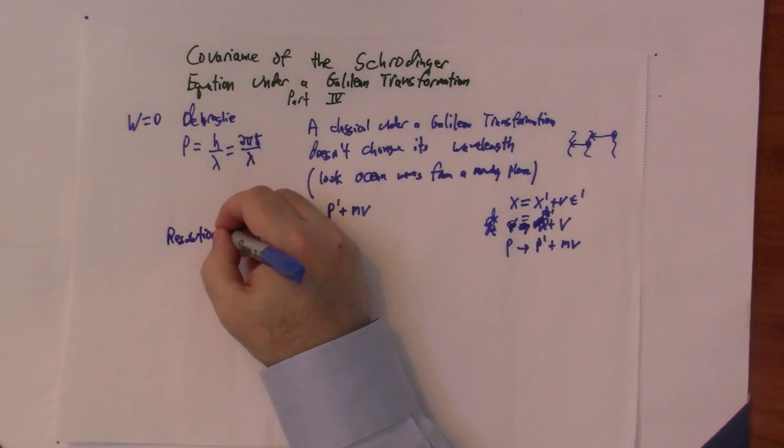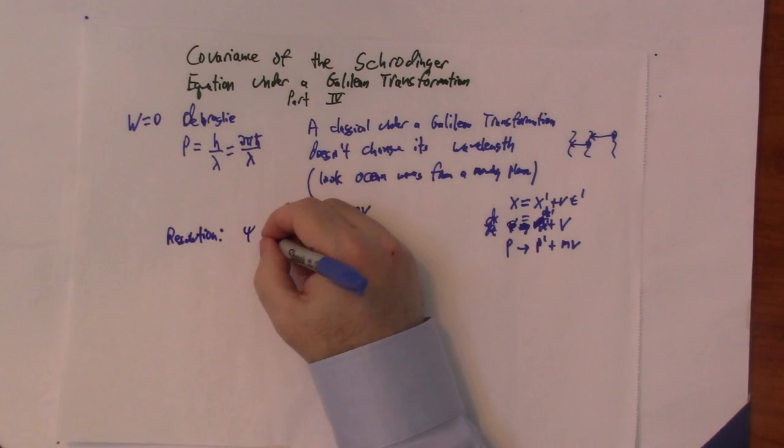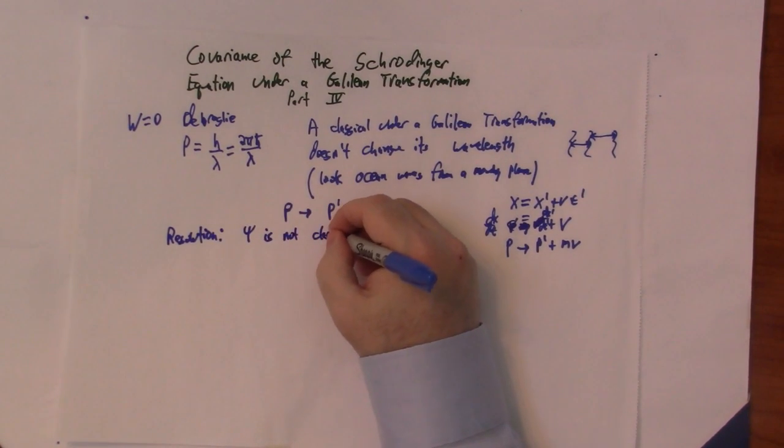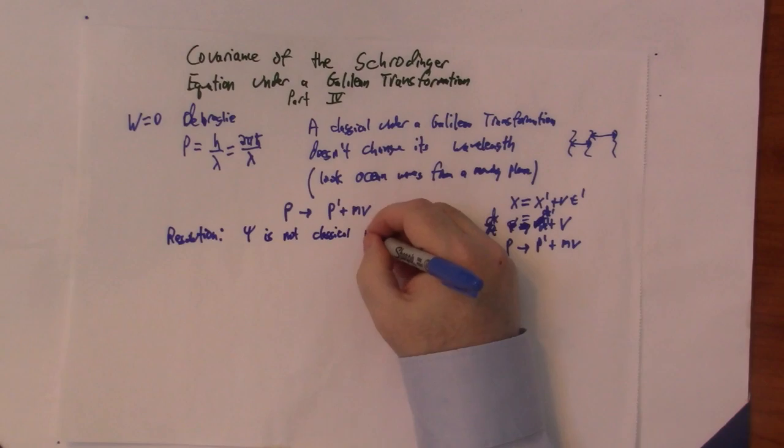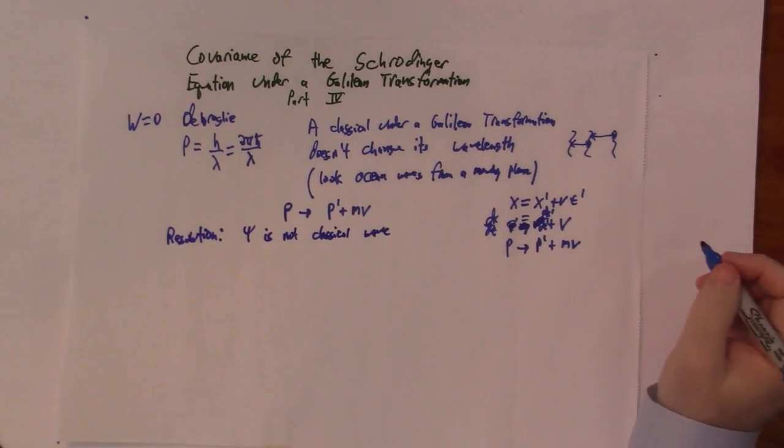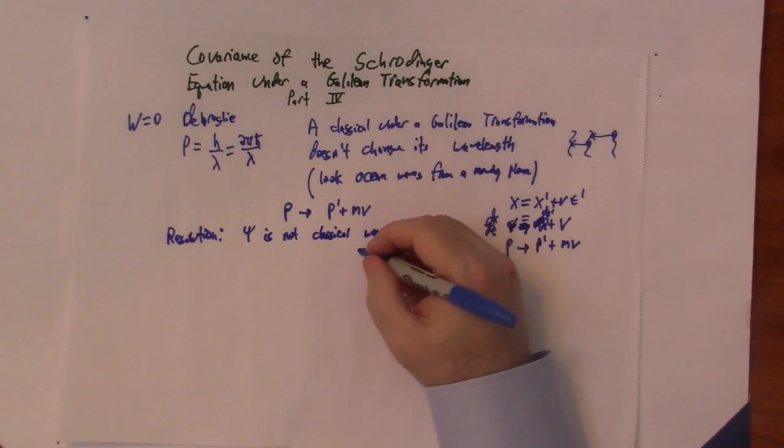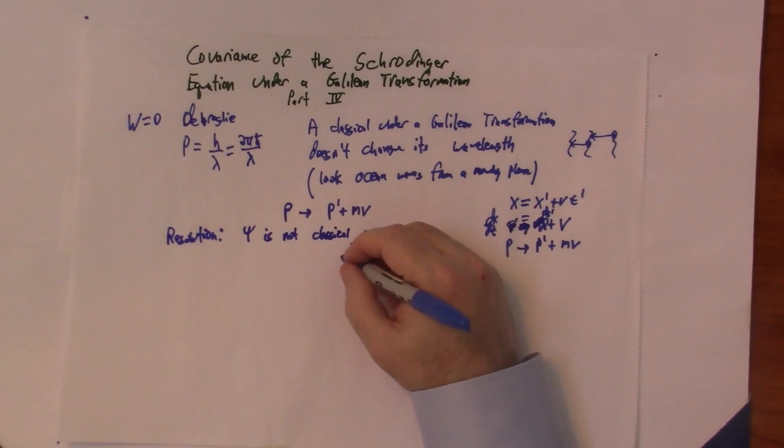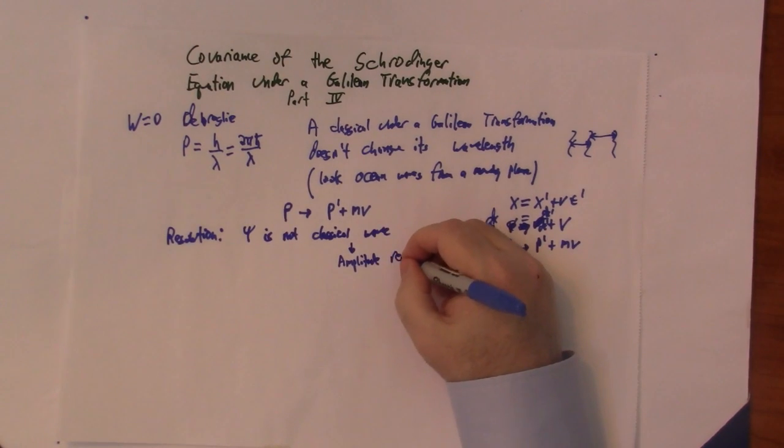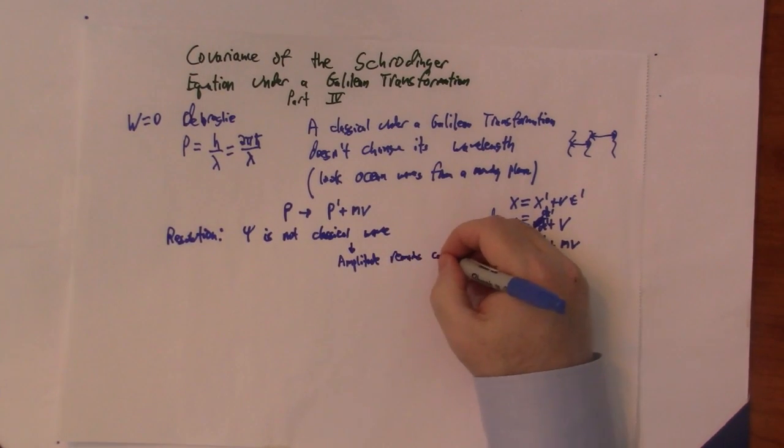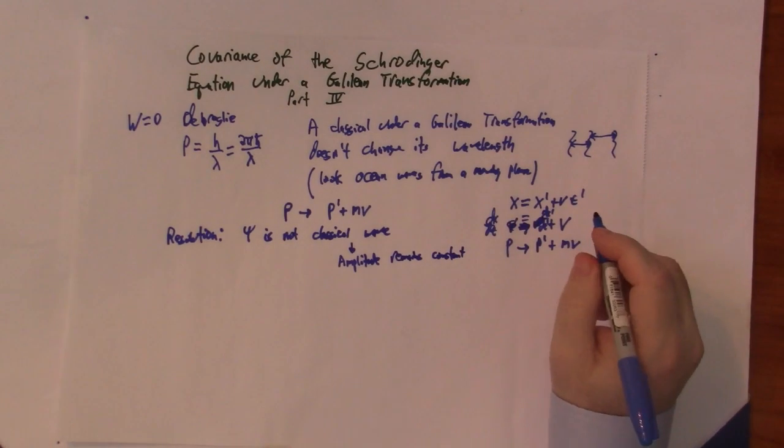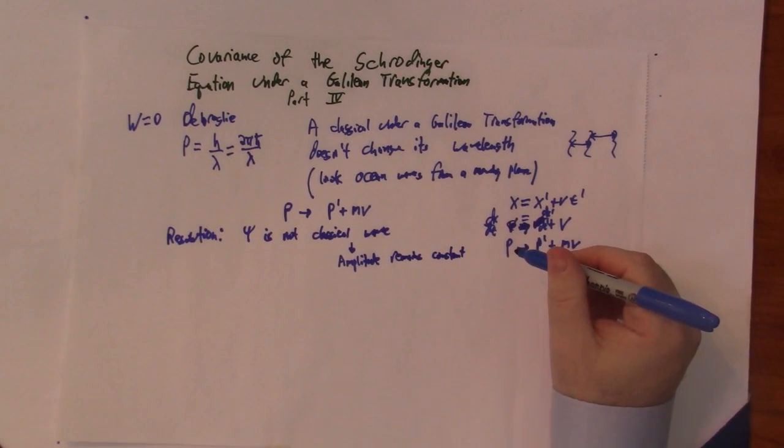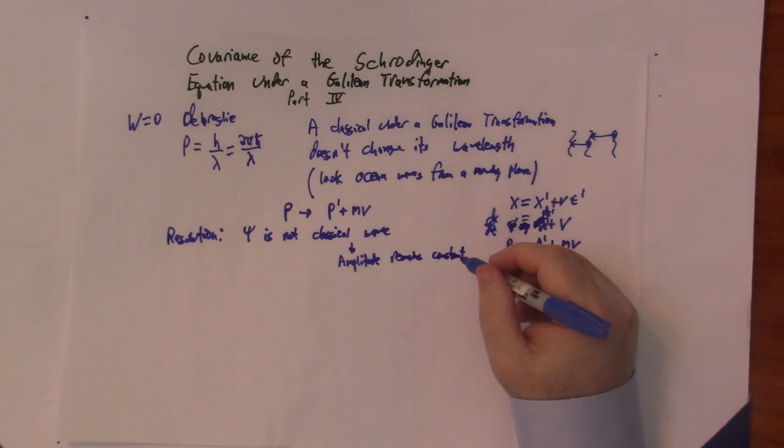And the resolution is, as we'll show, psi is not a classical wave. See, under a classical wave, the amplitude remains constant under a transformation. But we just showed in the prior part that, in fact, the amplitude undergoes a phase transformation. And that is the resolution of the paradox.